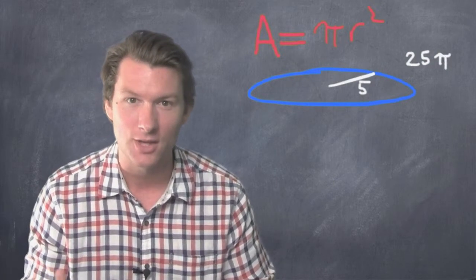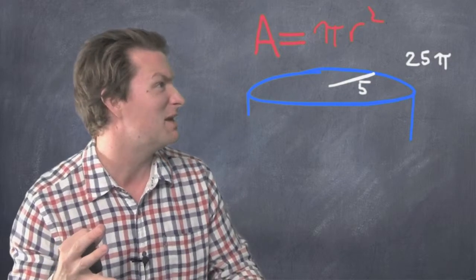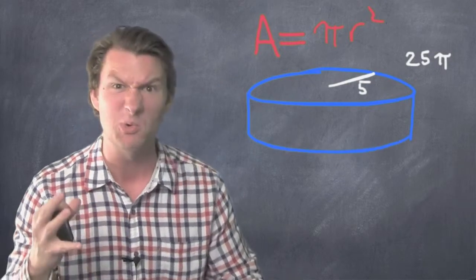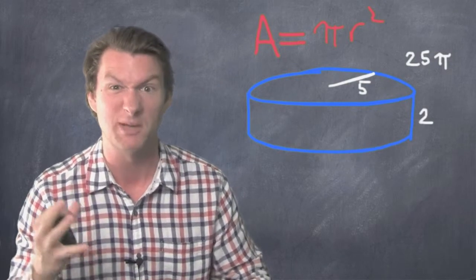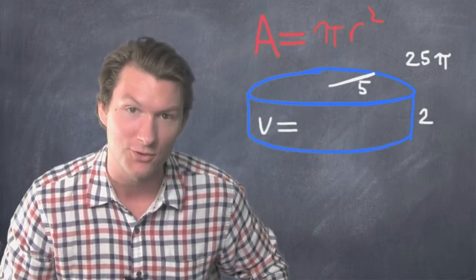Now let's take that circle and turn it into a cylinder. We pull it into the third dimension. Let's say it's two tall into the third dimension. Two into the third dimension. What would the volume of this cylinder be?